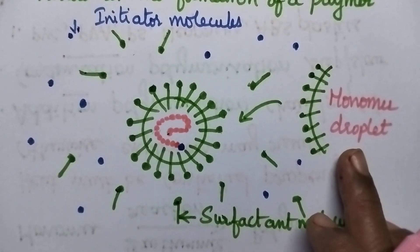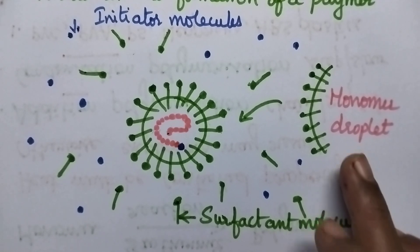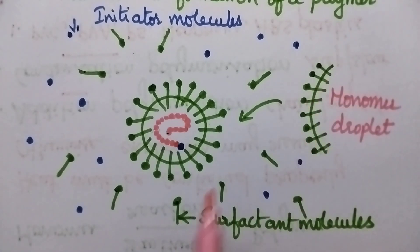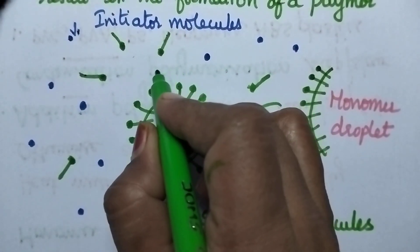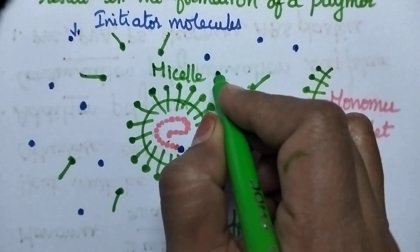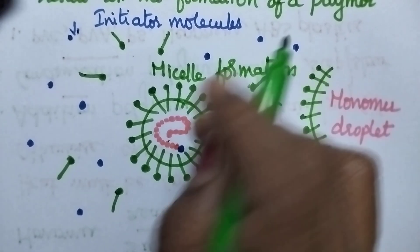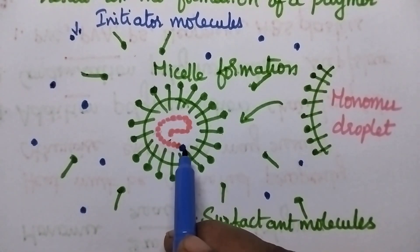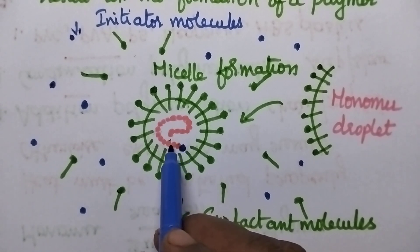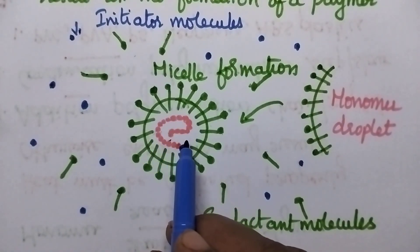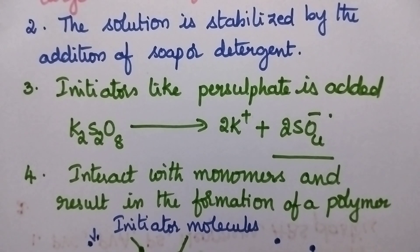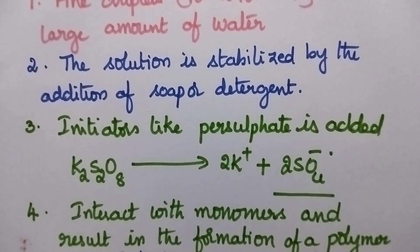Initially, the monomer is dispersed in the form of fine droplets. Then soap or detergent is added as the stabilizer, resulting in the formation of micelles. After that, whenever the initiator is added and enters the monomer droplet, it interacts with each and every monomer and results in the formation of the polymer. This polymerization technique continues until all the monomers interact and form the polymer.